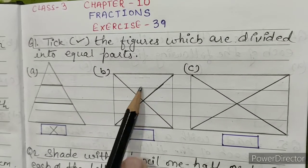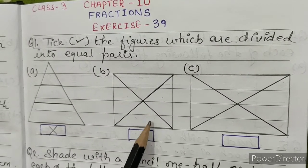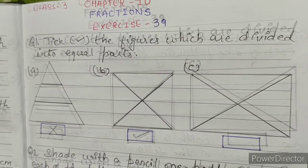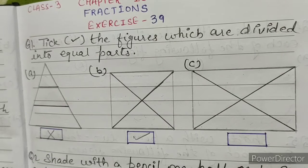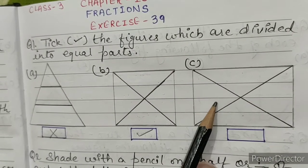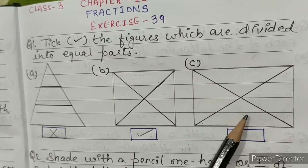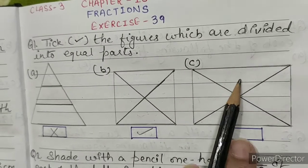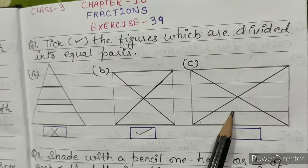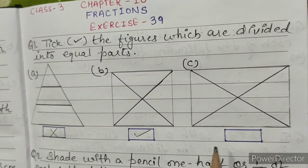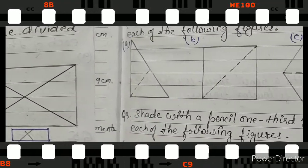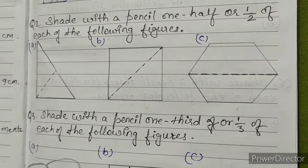This square is divided into four equal parts — all four parts are equal, so this is correct. C: this rectangle is divided into four parts, but all four parts are not equal. These two parts are equal and these two parts are equal, but these two pairs are not equal to each other, so we'll mark it cross.